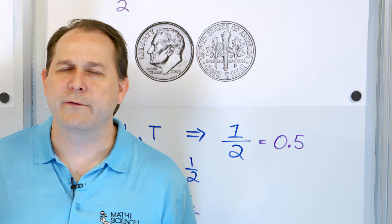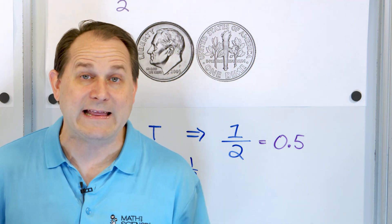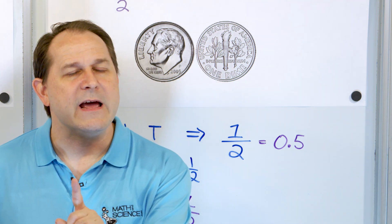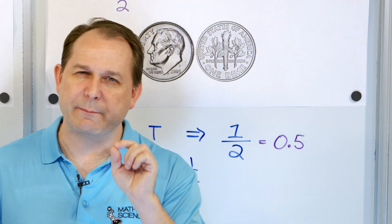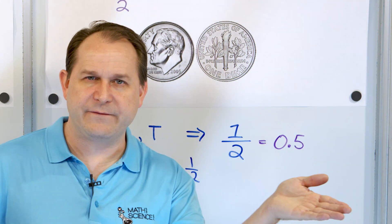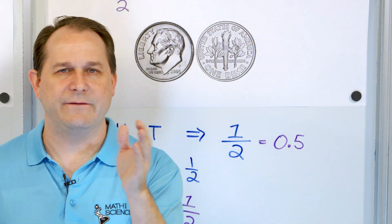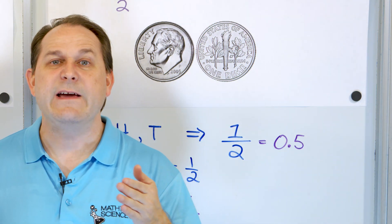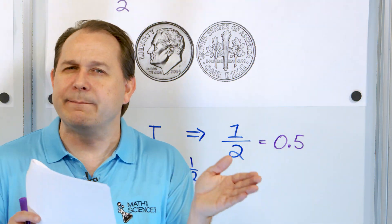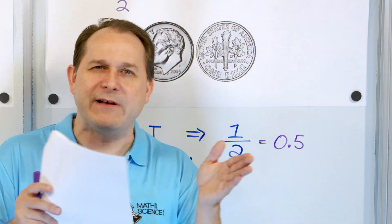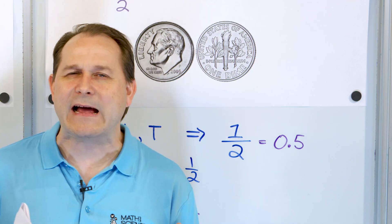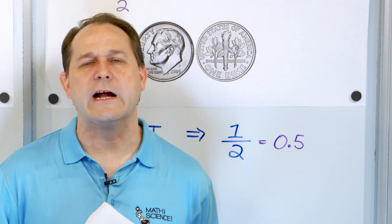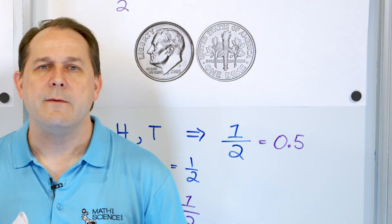But we all know from experience that it doesn't always fall out like that. If you flip it a hundred times, you should get something pretty close to 50 heads and 50 tails. If you flip it a thousand times, you should get close to 500 and 500. But it may not be exactly right — it may be 499 heads and 501 tails.